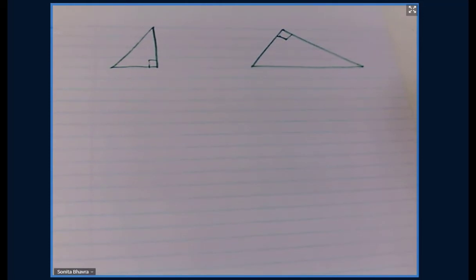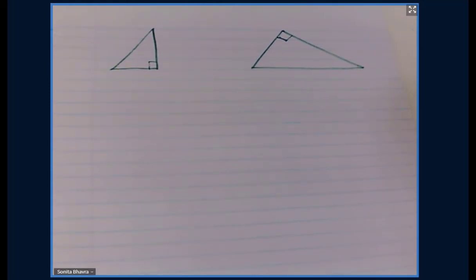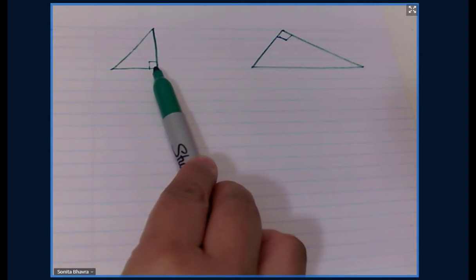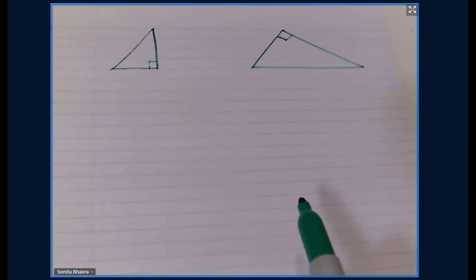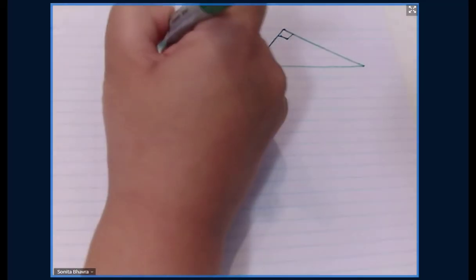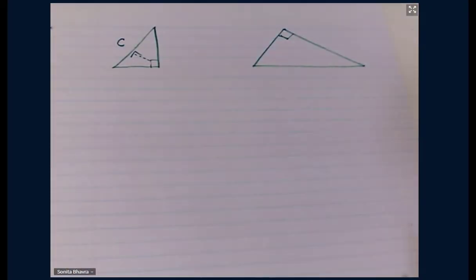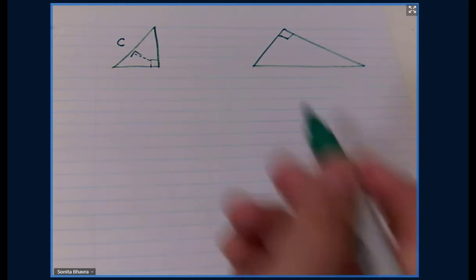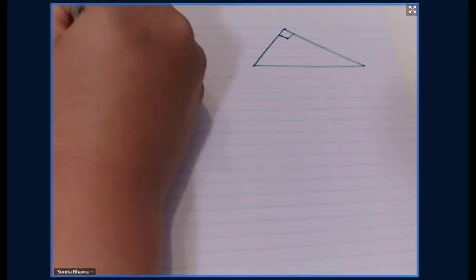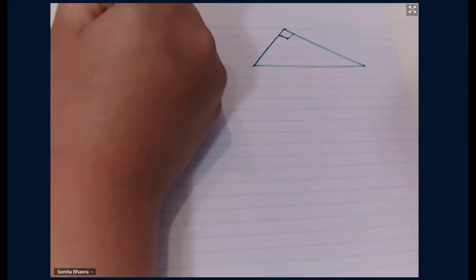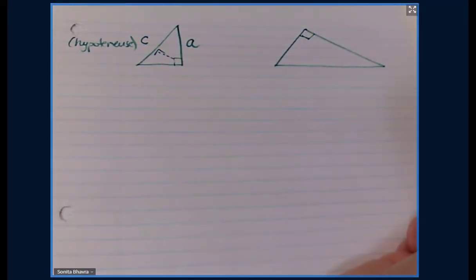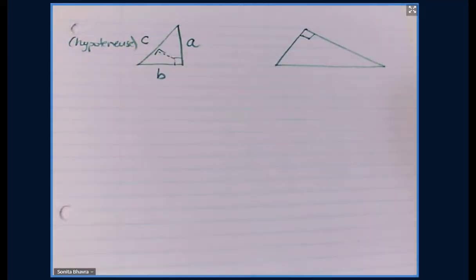We've got two more triangles to label. Again, there's the 90-degree angle for this right-angle triangle, so the side opposite the right angle will be labeled as the hypotenuse, represented with a C. There's our hypotenuse. This side here would be labeled A as altitude, and then this side would be labeled B for base.